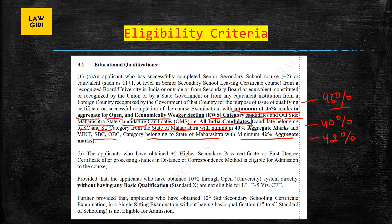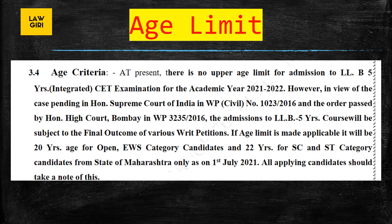If you belong to SC/ST category from the state of Maharashtra, then 40% is required. If you belong to SBC, OBC, or VJNT belonging to the state of Maharashtra, then 42% is required. This is the minimum eligibility criteria.